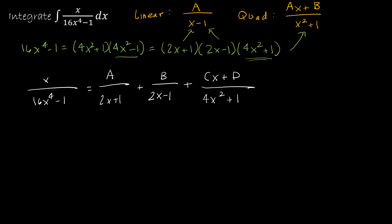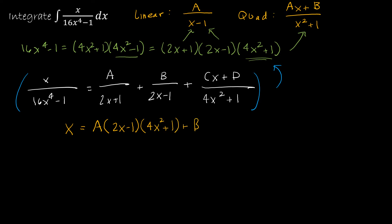When we multiply everything by the denominator, we get: x equals A times (2x − 1)(4x² + 1), plus B times (2x + 1)(4x² + 1), plus (Cx + D) times (2x + 1)(2x − 1). Now we have to solve for A, B, C, and D — four unknowns this time.